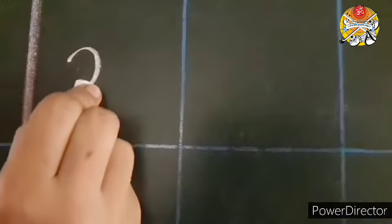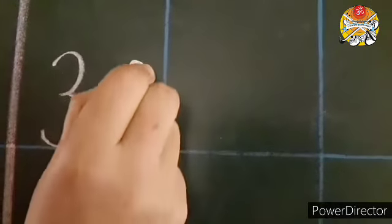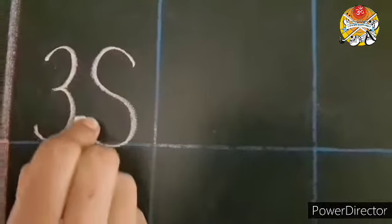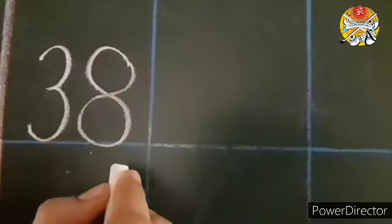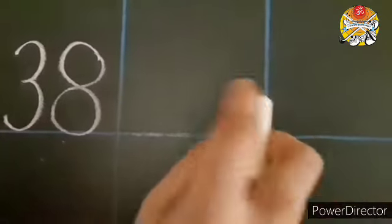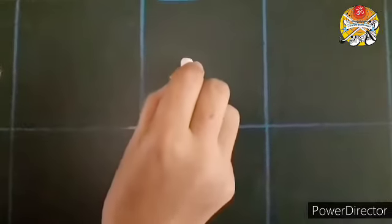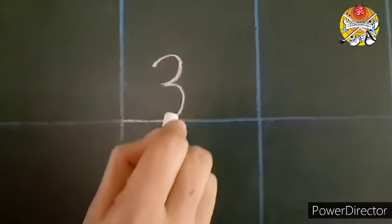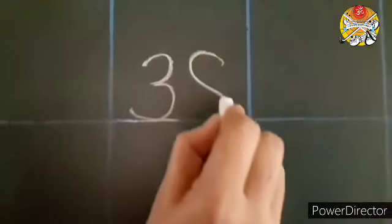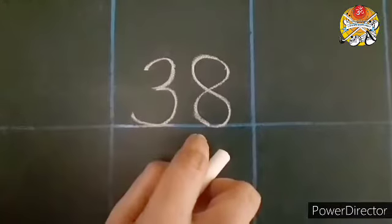Let's start from first box. 3, 38, 38. I will show you again. Leave one box and write in the next box. 3, 38, 38.